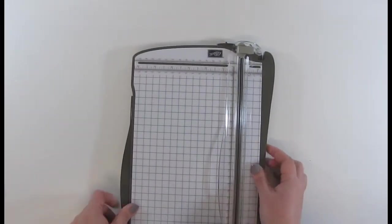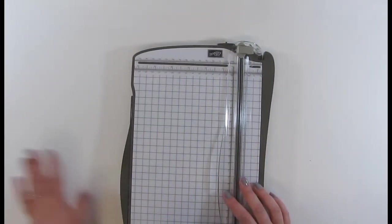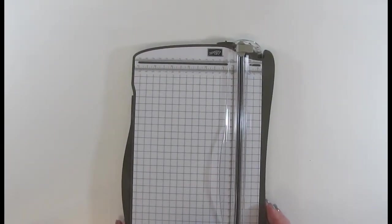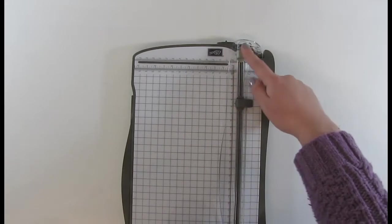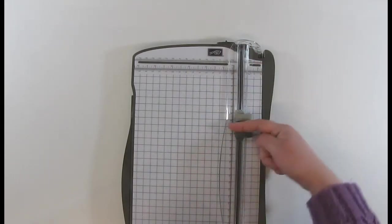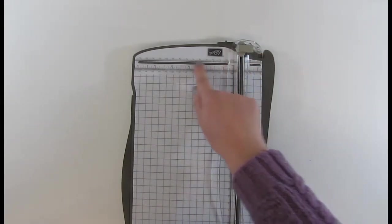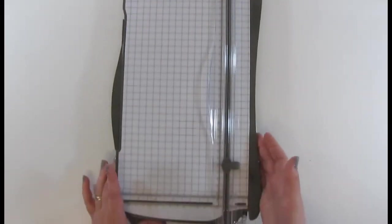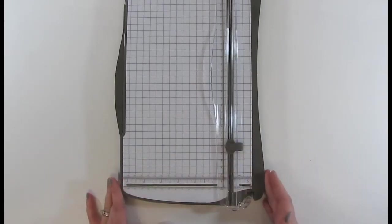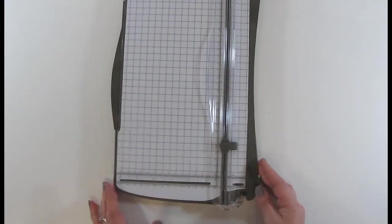So when you want to score or cut you can push the opposite one out of the way. So if I want to cut now I could push this one right out of the way and still use this one perfectly fine without having to take any blades or scorers off which is just genius.